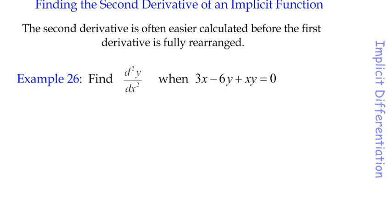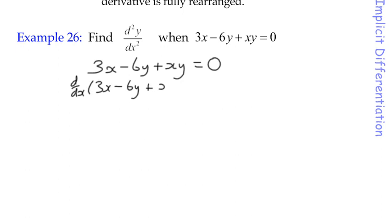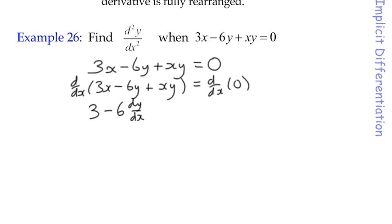I'll do this example in two different ways. In example 26 we've got the function 3x minus 6y plus xy equals zero. To find the first derivative I would differentiate both sides in the normal way, indicating that I'm differentiating with respect to x. The first expression 3x differentiates to 3. The second one, negative 6y, differentiates to negative 6 dy by dx.